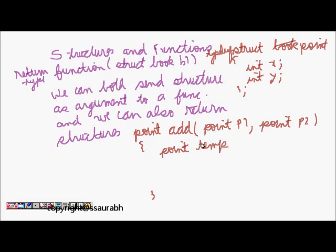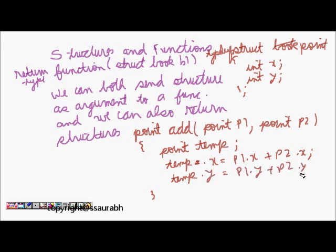In temp, we do temp.x equals p1.x plus p2.x, and temp.y equals p1.y plus p2.y, and now we return temp. This way we can use functions and pass structures as arguments and return structures from functions. This is perfectly fine for passing structures.